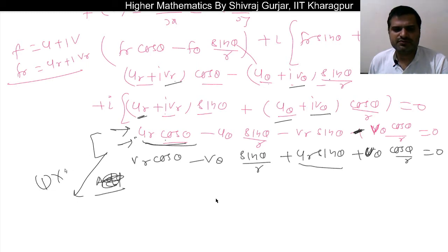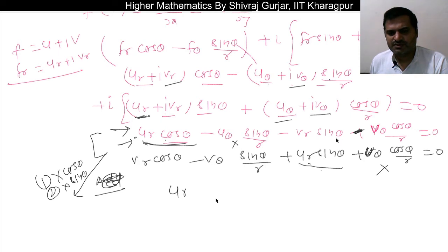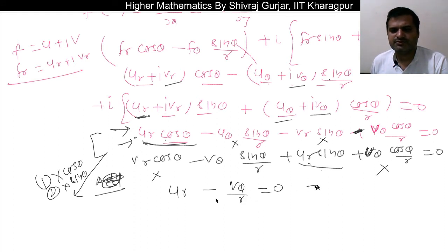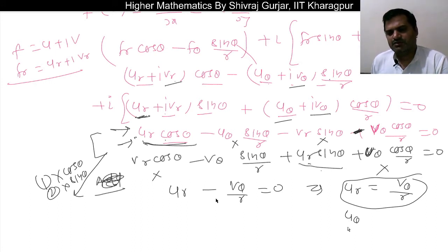If we multiply equation one by cos θ and equation two by sin θ and add, the cross terms cancel due to cos² θ + sin² θ = 1. Similarly, multiplying the first by sin θ and the second by cos θ and subtracting gives us the second relation. From these manipulations we can say that u_r = ν_θ/r.